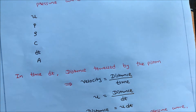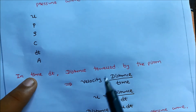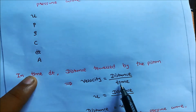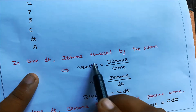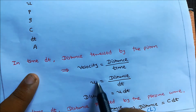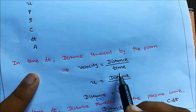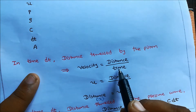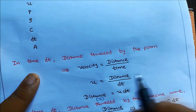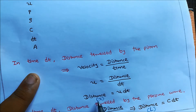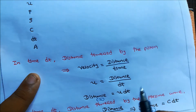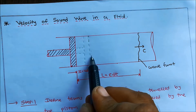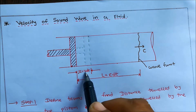Define terms and find the distance travelled by the piston in time dt. We know that velocity equals distance per unit time. Piston velocity is u, so u equals distance divided by time. For a small time interval dt, the distance travelled by the piston is x, so x equals u·dt.